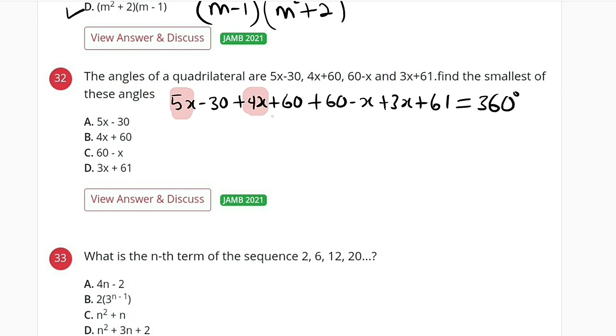Let us collect the like terms. We have 5 here, we have 4 making 9, take away 1 we have 8, add 3 making 11, so we have 11x.